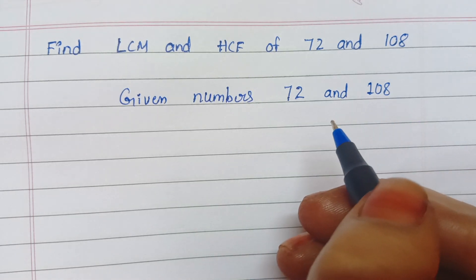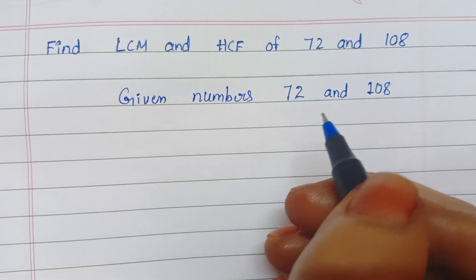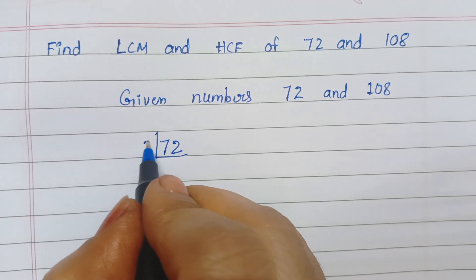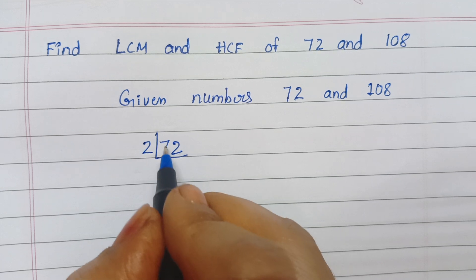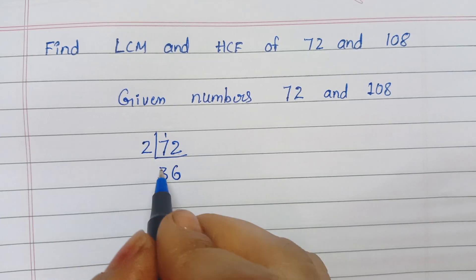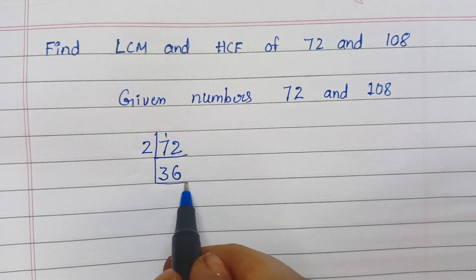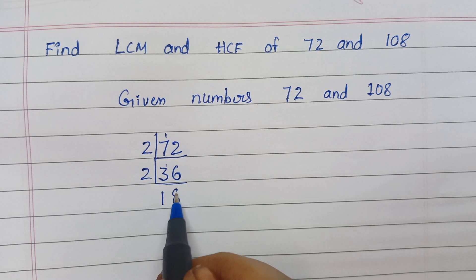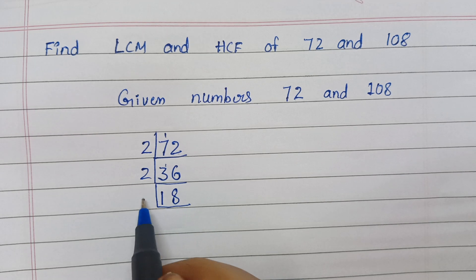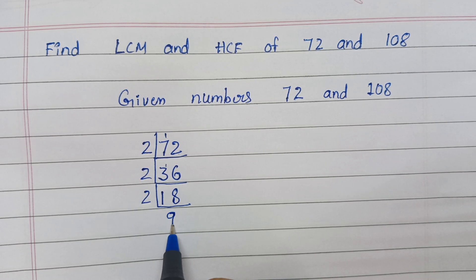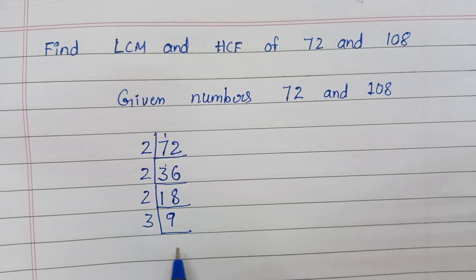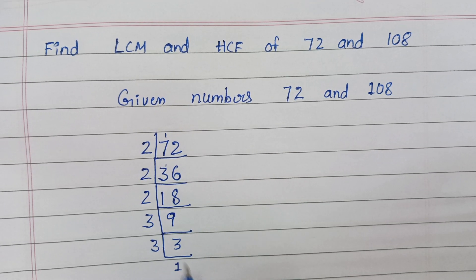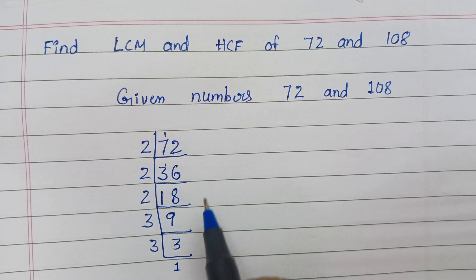First we write the prime factorization for those numbers. Let us consider 72. Using the 2 times table: 2 divides 72, then 2 divides 36, then 2 divides 18. Here 2 table is not possible. Using the 3 table: 3 divides 9, then 3 divides 3, giving 1. The prime factorization is complete for 72.